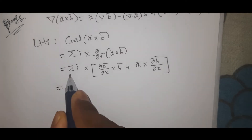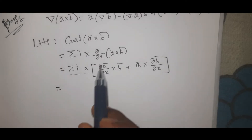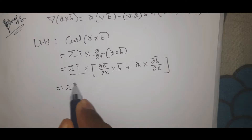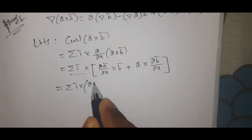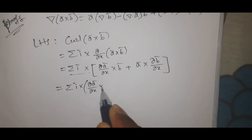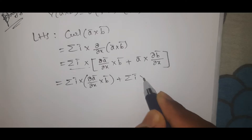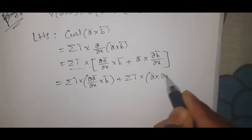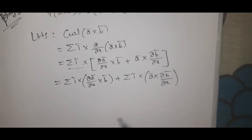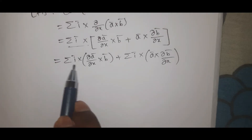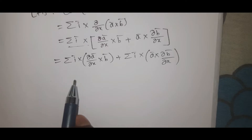That equals summation i̅ cross (∂ā/∂x × b̄) plus summation i̅ cross (ā × ∂b̄/∂x). Now we expand the first part.